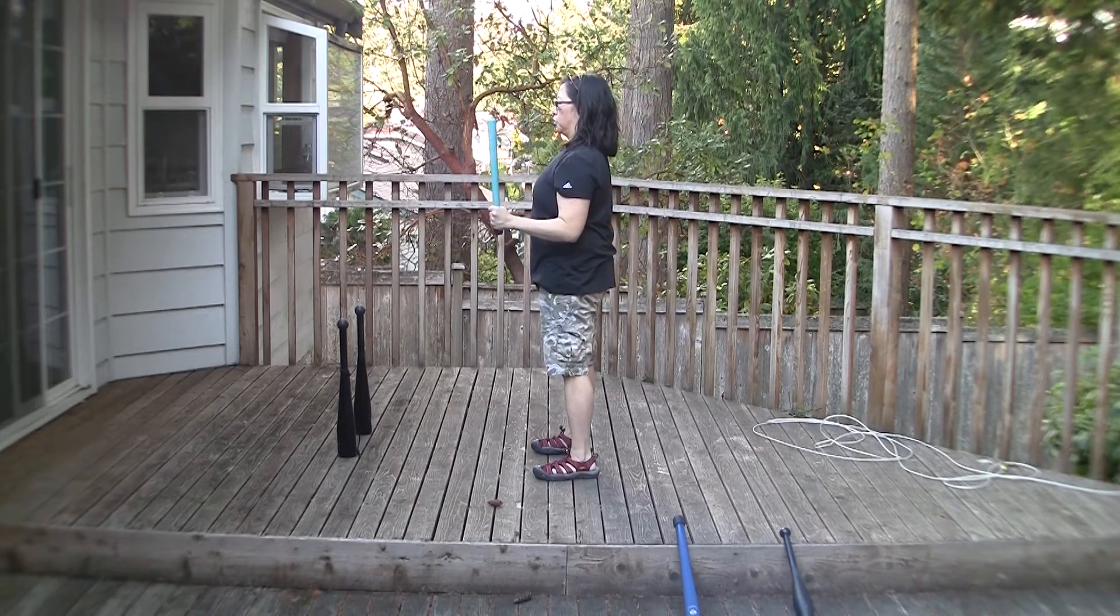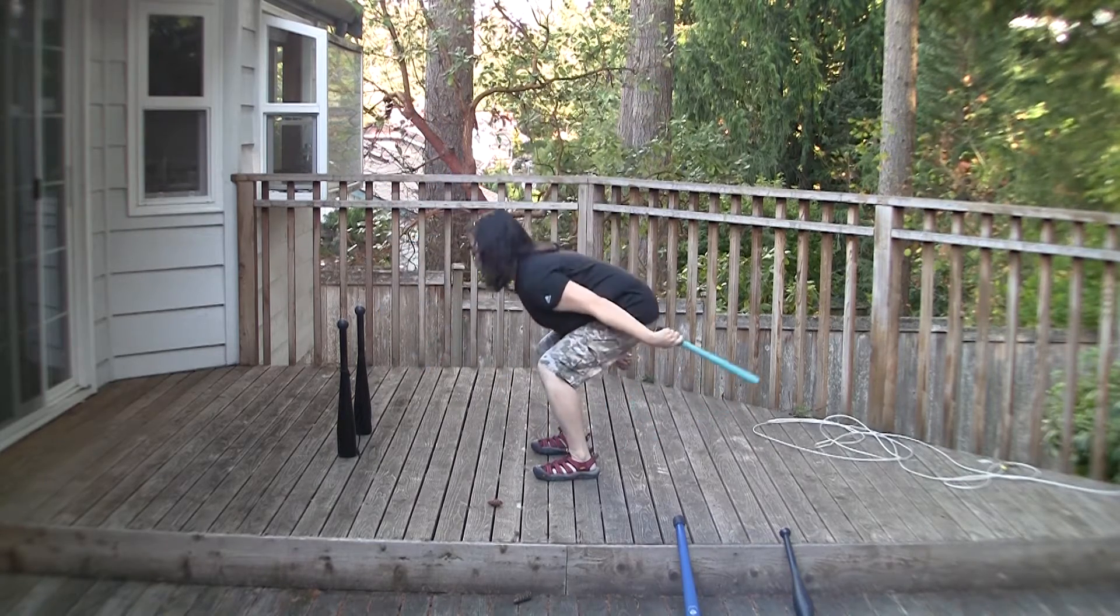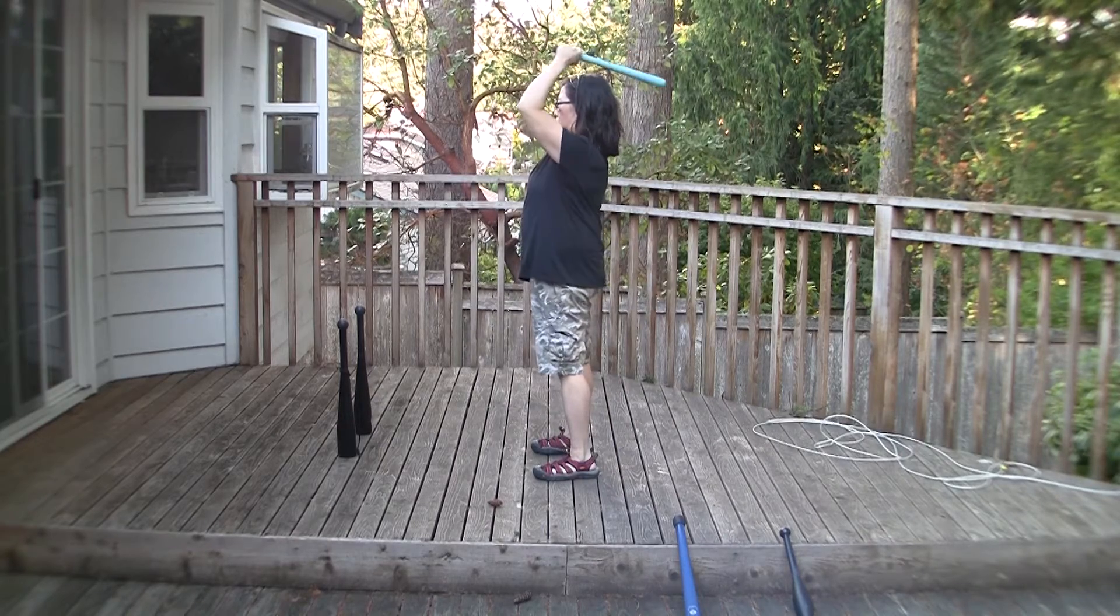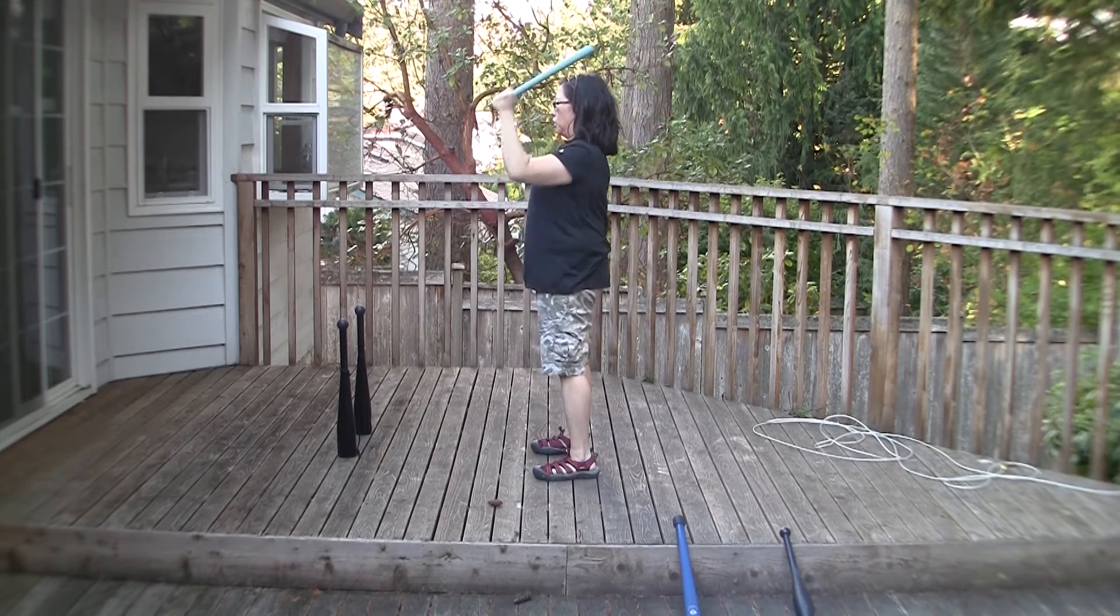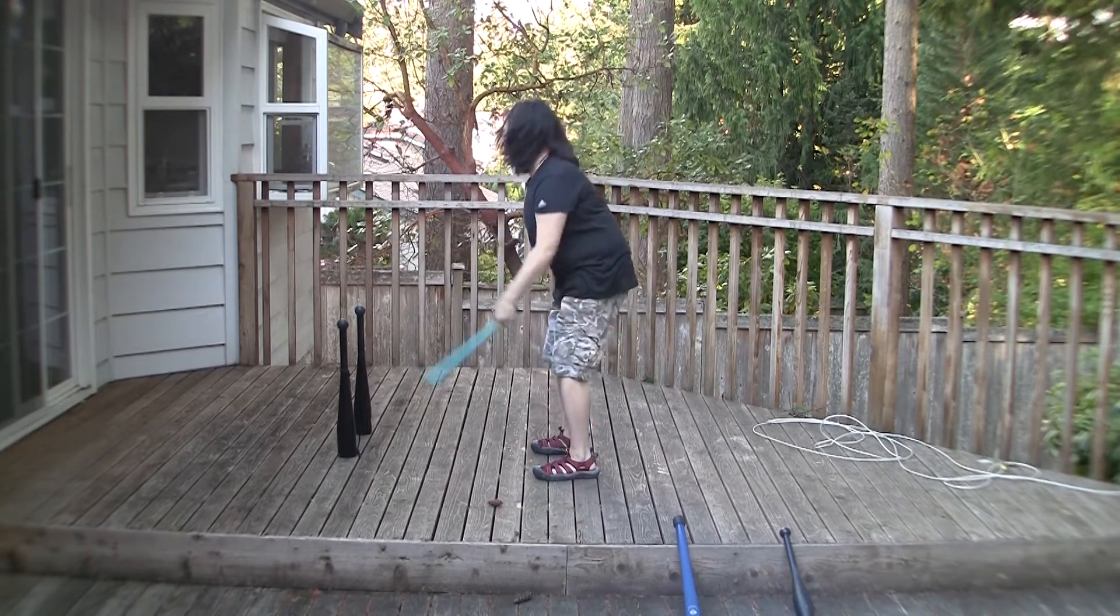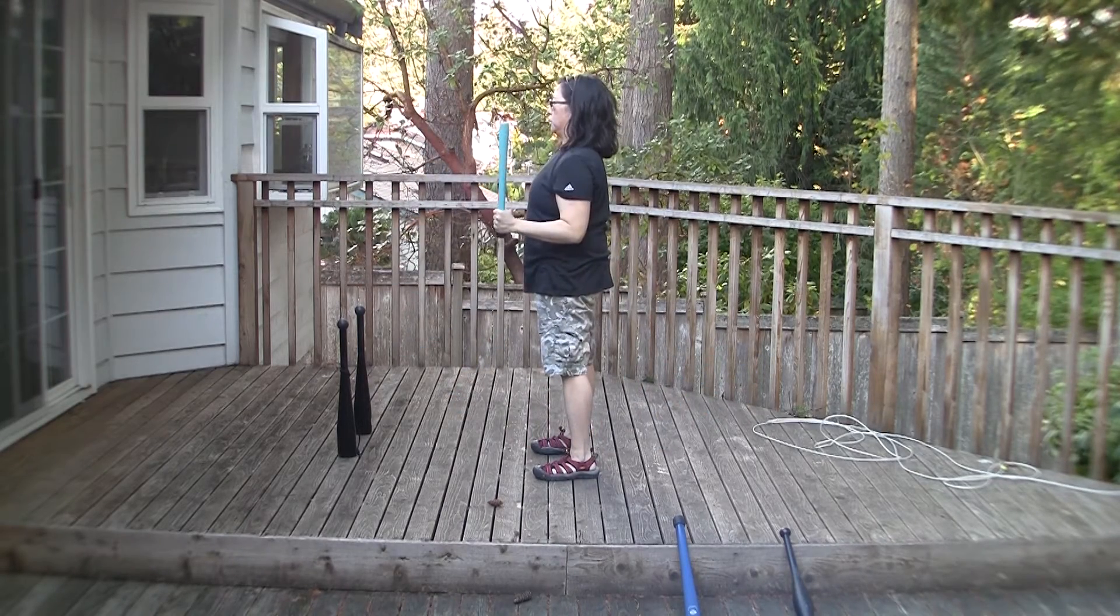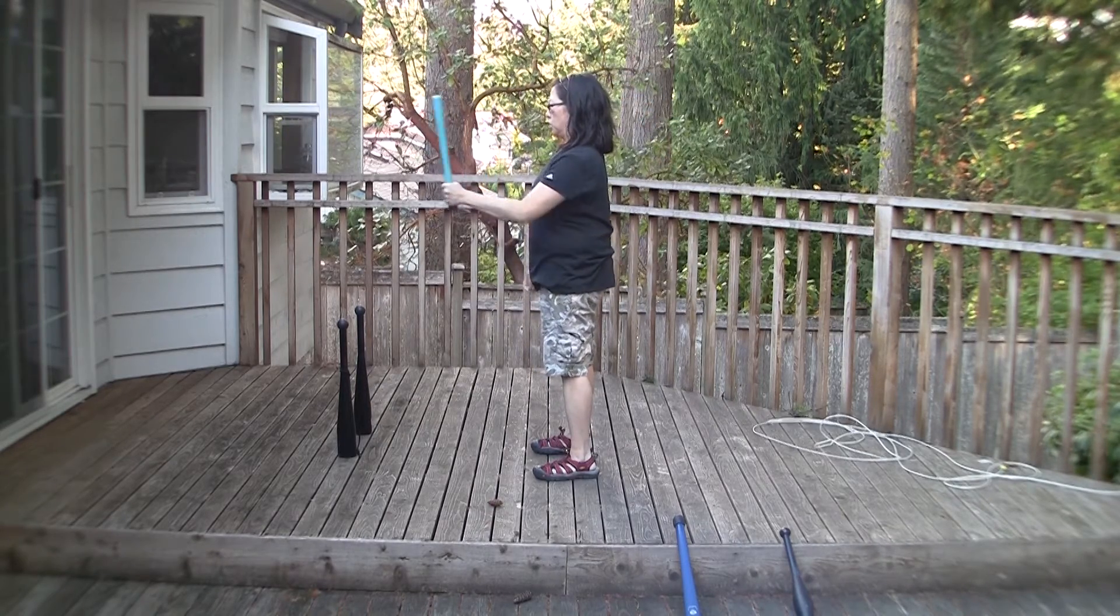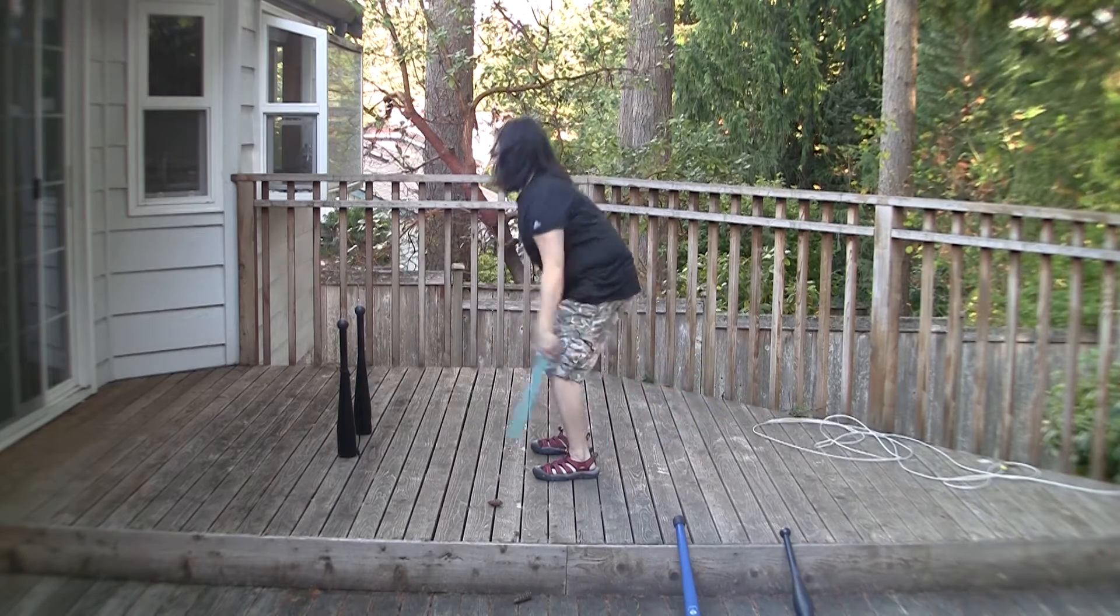By gripping closer to the knob and maximizing the moment arm distance, the athlete is making the exercise more difficult. More work is required to move the club through a greater arc length. By choking up and reducing the moment arm distance, the athlete is regressing the exercise. Less work is required to move the club through a smaller arc length.